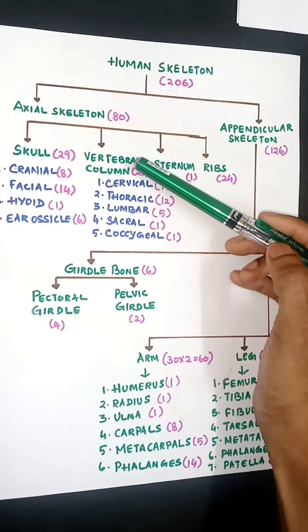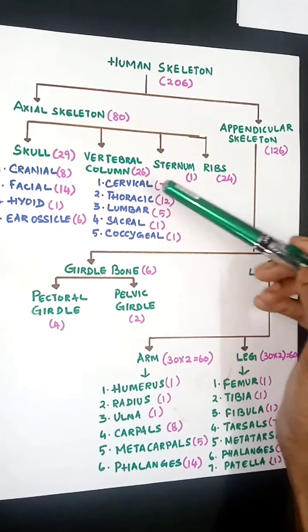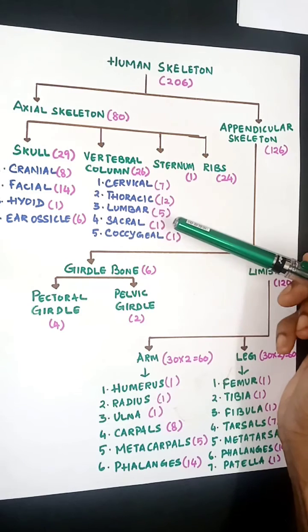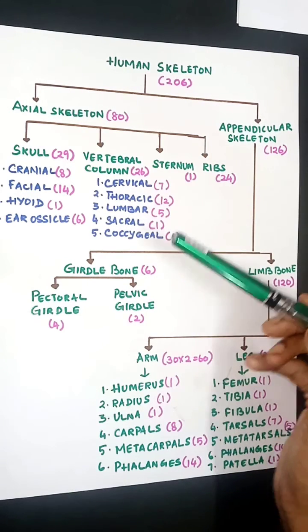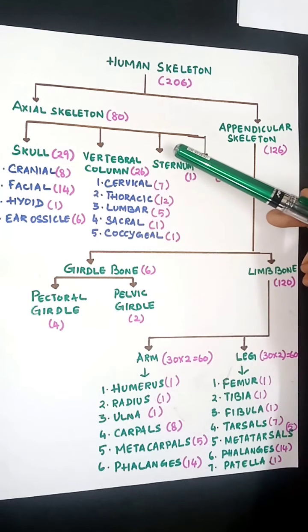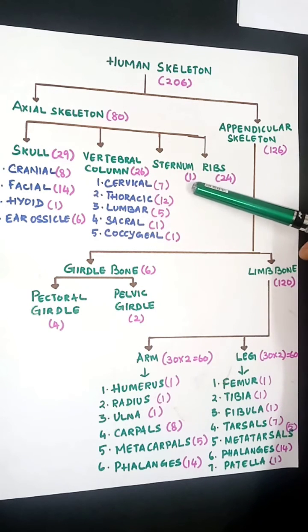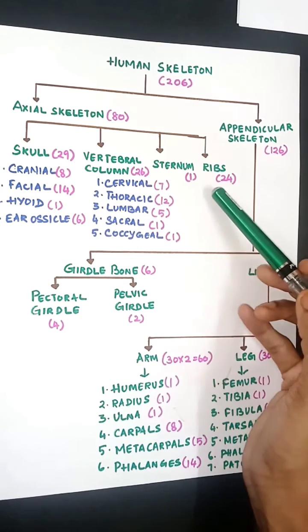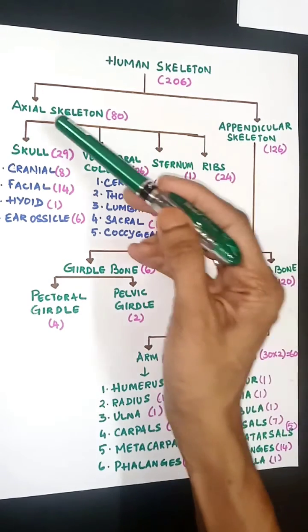The vertebral column has 26 bones: cervical 7, thoracic 12, lumbar 5, sacral 1, coccygeal 1. This forms the backbone of the body or the spinal column. Coming to the chest region, you have sternum in the front with one bone, and ribs have 12 pairs, so I've mentioned it as 24. When you add it up, it comes to 80 in axial skeleton.